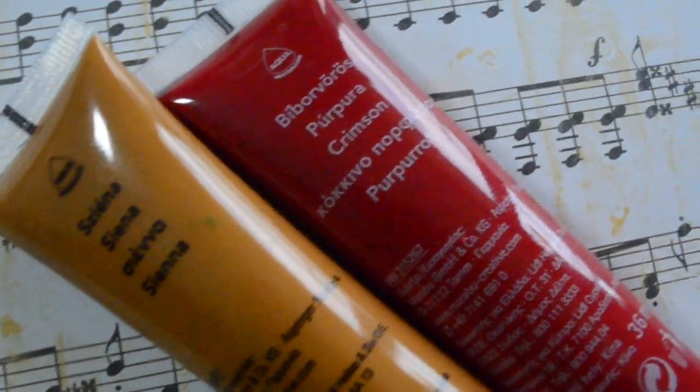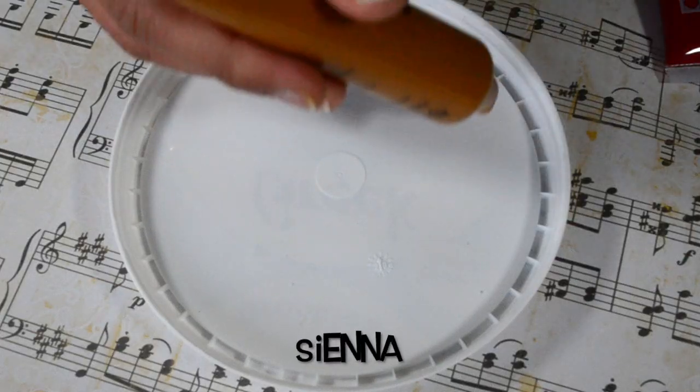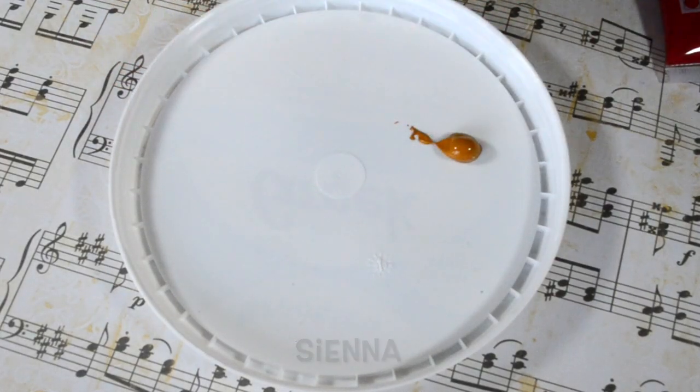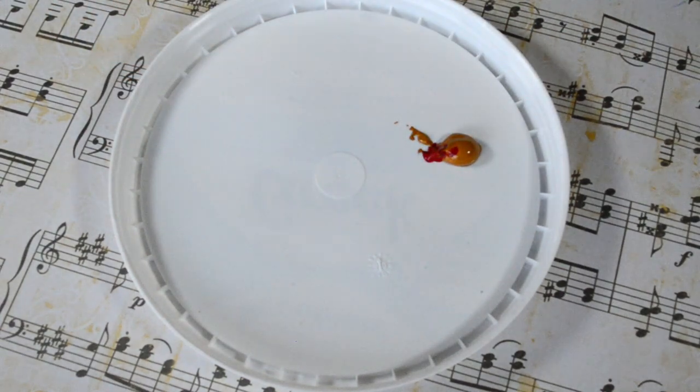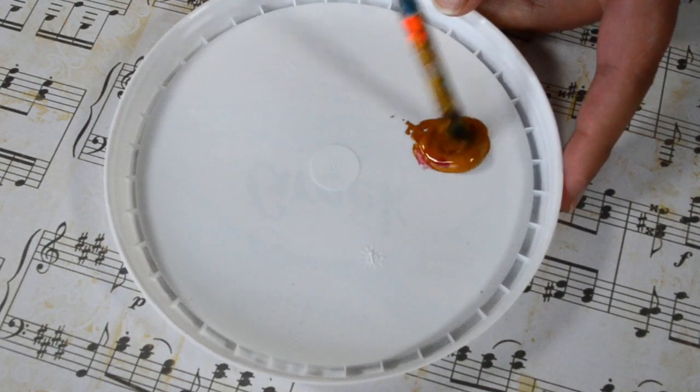For the first doodle design, I am making terracotta color by mixing sienna and crimson. We'll add a little bit of crimson into sienna color, and you can add more later if you feel the need.